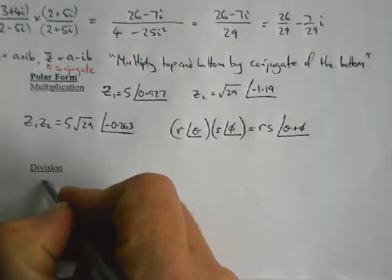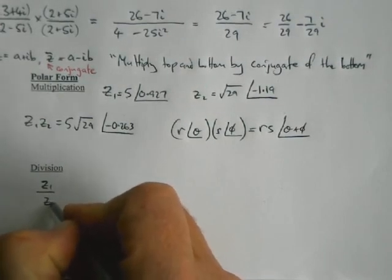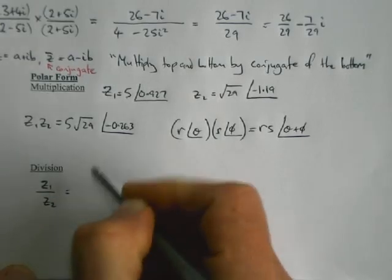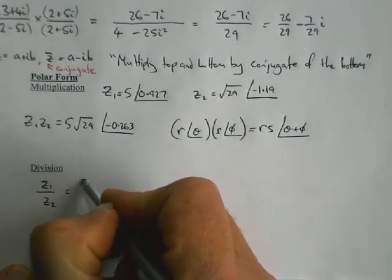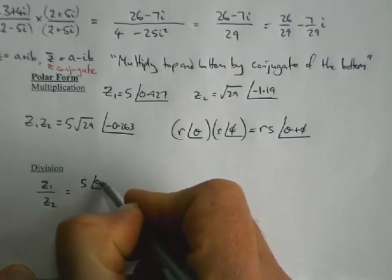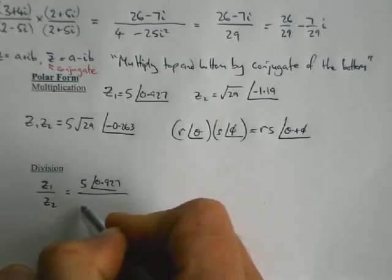Division in polar form is a lot easier than doing it in Cartesian form. If we try and divide these two, our first one is 5 with an angle of 0.927.